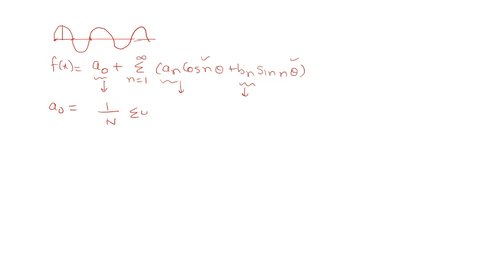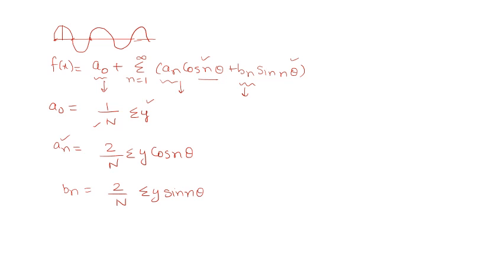The formula for the constant term a₀ is (1/n)·Σy. For aₙ it is (2/n)·Σy·cos nθ, since aₙ has cosine with it. Similarly, bₙ is (2/n)·Σy·sin nθ. To calculate the amplitude, which is the maximum height, you need to understand how to expand these terms in harmonic analysis.